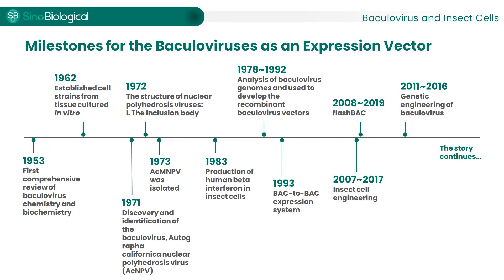Our understanding of baculovirus is derived from a long history of research. The topic was first revealed in 1953. In 1971, AcMNPV was discovered. Virus particles were isolated in 1973. Subsequently, more information such as the virus structure, life cycle, genome map, and physiology was obtained, which was helpful for the development and modification of recombinant baculovirus vectors. In the history of vector development, linearization of the AcMNPV genome was regarded as a milestone. The established vector was then used to express recombinant proteins. Human beta interferon was the first protein produced successfully by the BEVS.